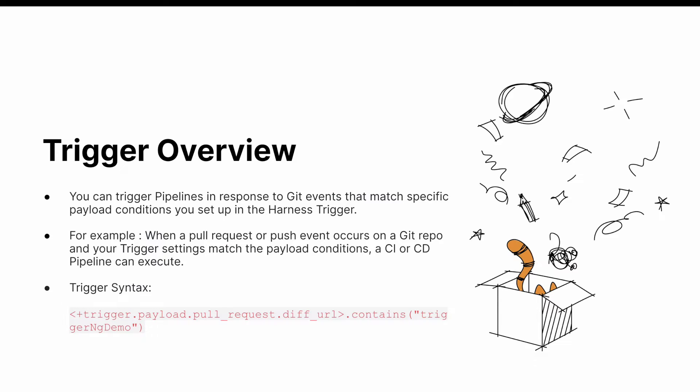This is the syntax of the trigger, which uses a pull request to activate the pipeline execution. You can also have different other GitHub events such as a push event, a pull request opening event, or a pull request merge — that depends on your requirement.